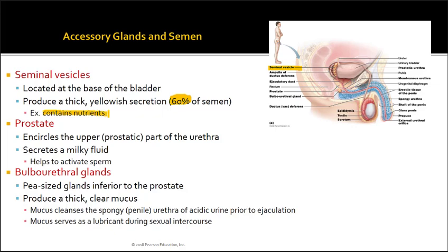The prostate encircles the urethra — the urethra passes right through it. Individuals with inflamed prostates or prostate cancer will have pressure put on their urethra, making urination difficult because urine has a hard time getting past the enlarged prostate to exit the body.